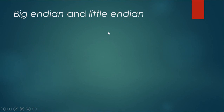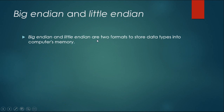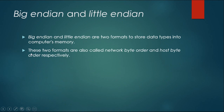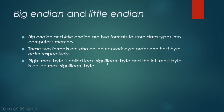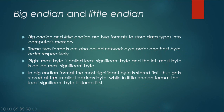Big Indian and Little Indian are two formats to store data types into computer's memory. These two formats are also called network byte order and host byte order respectively. The rightmost byte is called the least significant byte and the leftmost byte is called the most significant byte. In Big Indian format, the most significant byte is stored first, thus gets stored at the smallest address, while in Little Indian format the least significant byte is stored first.